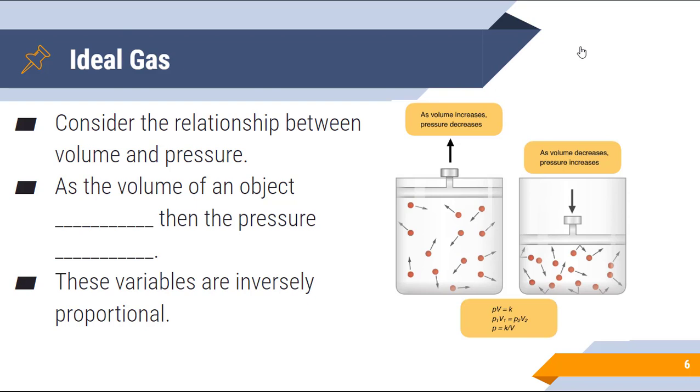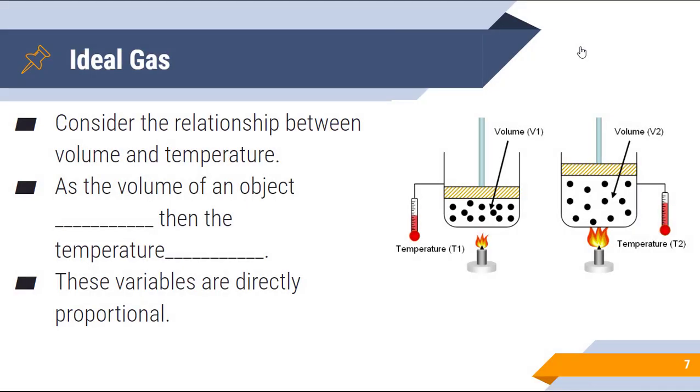Let's take a look at the relationship between volume and temperature. As the temperature of a gas increases, assuming that the pressure is the same, the number of moles is the same, and the container can expand, then the volume will increase. Think about this as a hot air balloon. If you heat the gas that is inside of the hot air balloon, then the volume of the gas itself actually goes through and expands, and you can see that in the image here on the right hand side. These variables are directly proportional, meaning that as one increases so does the other. As the temperature increases, so does the volume.